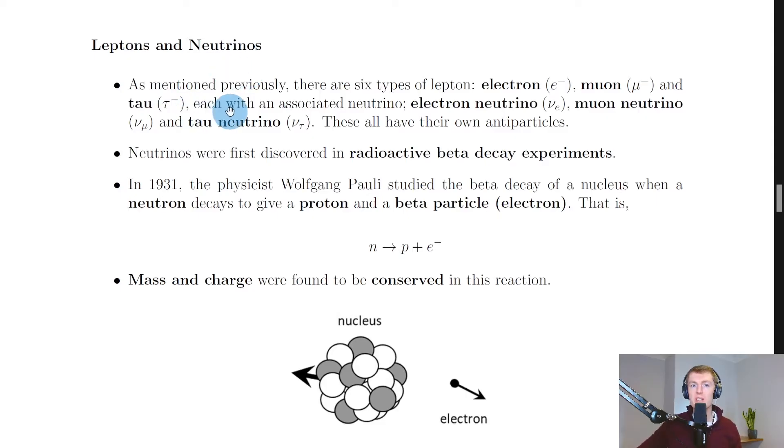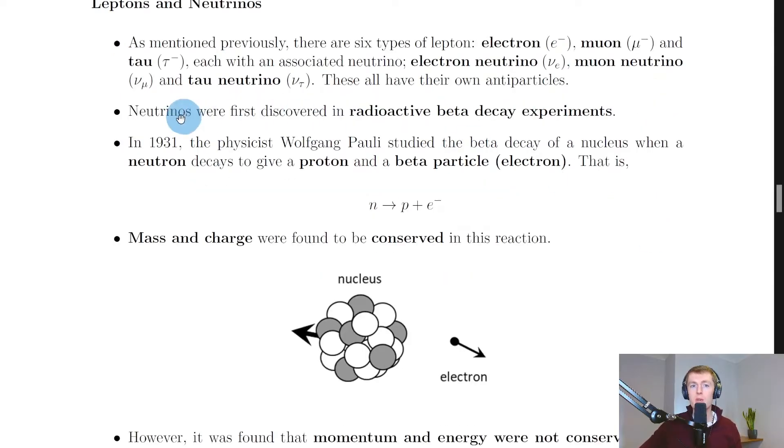As mentioned previously, there are six types of lepton: the electron, muon, and tau, each with an associated neutrino - the electron neutrino, muon neutrino, and tau neutrino. These all have their own symbols and antiparticles. Neutrinos were first discovered in radioactive beta decay experiments.